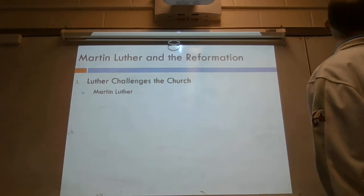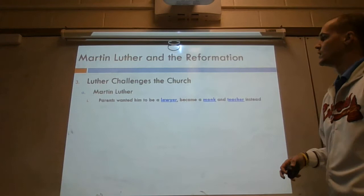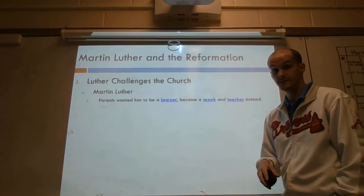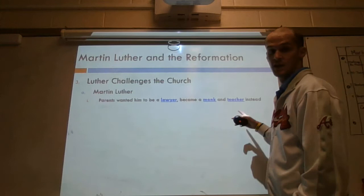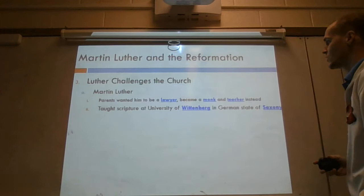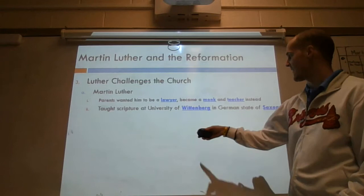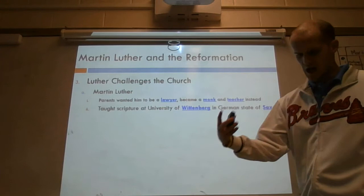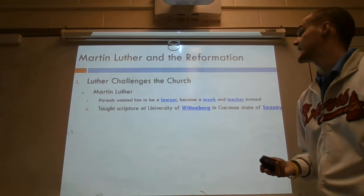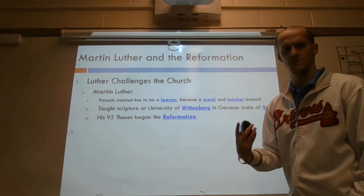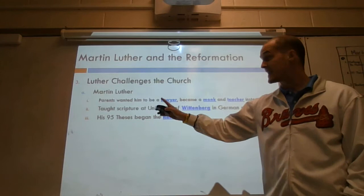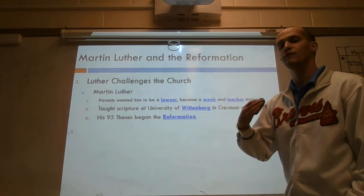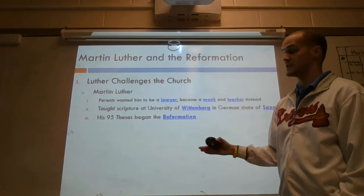A little bit about Martin Luther: his parents wanted him to be a lawyer — make that money. Instead, he becomes a monk and a teacher. He is not making the money he would have made as a lawyer. Instead, he becomes a teacher of religion at the University of Wittenberg in Germany. He teaches scripture and becomes very knowledgeable on the Bible and Christianity. It is from his knowledge of the Bible and Christianity that he's able to come up with his 95 theses, which begin the Reformation — the reforming and changing of the Catholic Church.